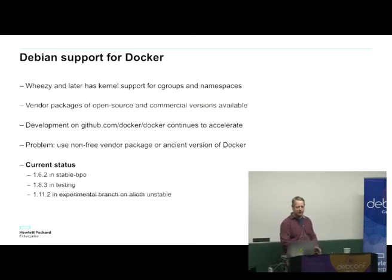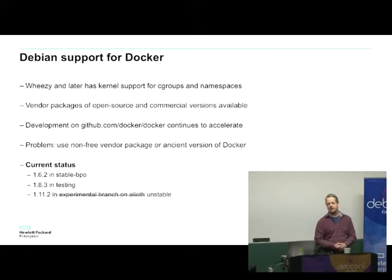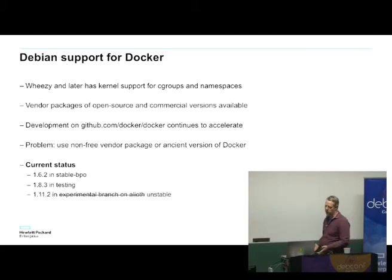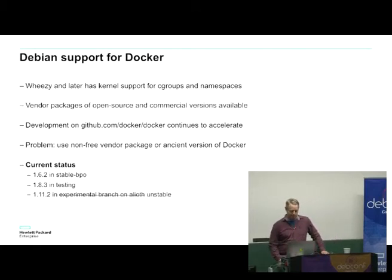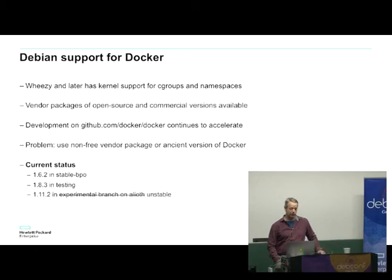So, Debian support for Docker. The main issue is that Docker is available as a vendor package from Docker.com — a binary deb file that you download and install. The security people, and frankly everyone, might not be happy with that — downloading random binary images from the internet is a bad idea. So we'd like to have it in Debian main, and this is something the packaging Go team and the Docker team have been working on. We have fairly old versions in stable backports — 1.6, 1.8.3 in testing. But 1.11.2 just got uploaded a few days ago into unstable, which is fantastic.